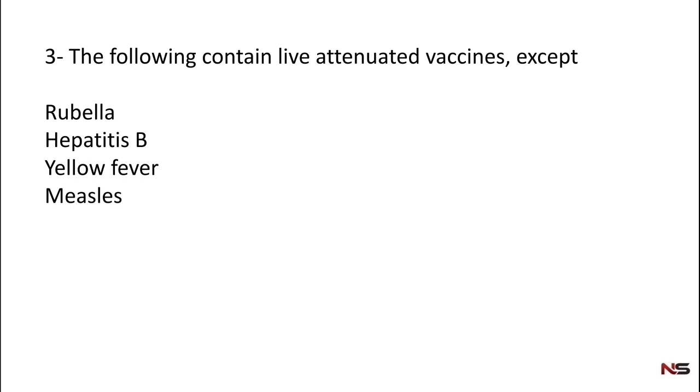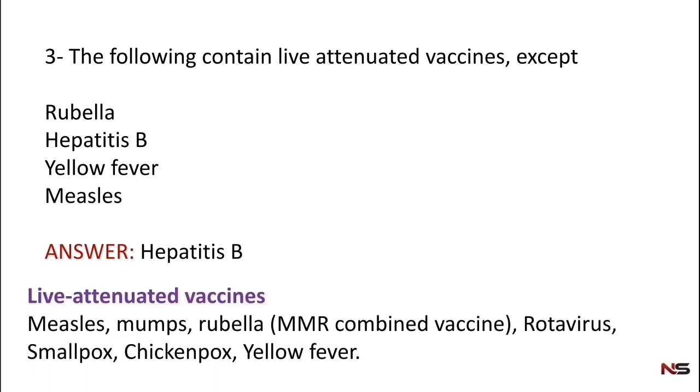The correct answer is hepatitis B. All others other than hepatitis B are live attenuated vaccines. Some examples for live attenuated vaccines are MMR vaccine (measles, mumps, rubella), rotavirus, smallpox, chickenpox, yellow fever.